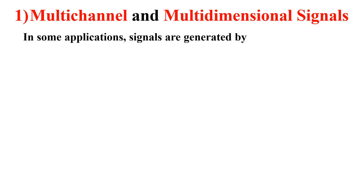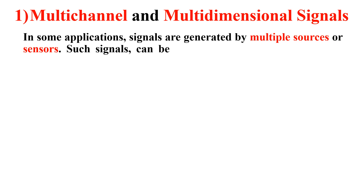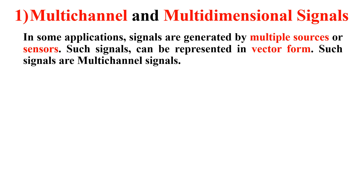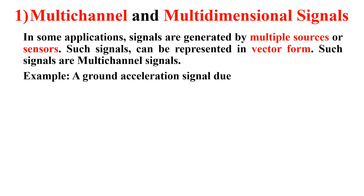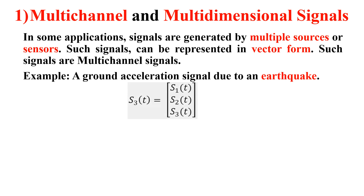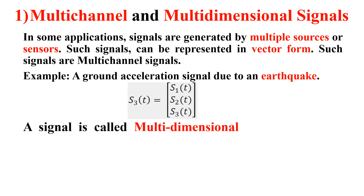In some applications, signals are generated by multiple sources or sensors. Such signals can be represented in vector form and are called multi-channel signals. For example, a ground acceleration signal due to an earthquake is a multi-channel signal, which can be represented as a vector: s1(t), s2(t), and s3(t).